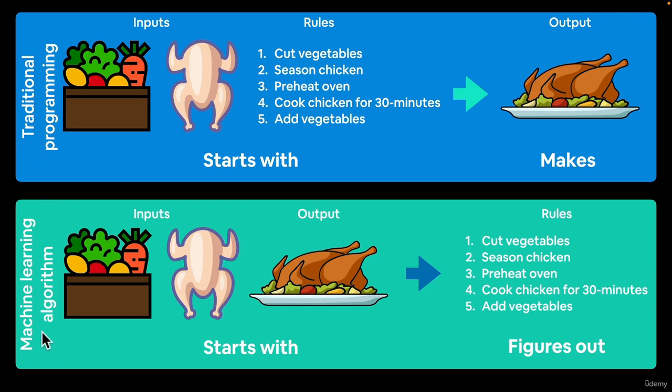Now a machine learning algorithm typically takes some inputs and some desired outputs, and then figures out the rules, so the patterns between the inputs and the outputs. So where in traditional programming we had to hand write all of these rules, the ideal machine learning algorithm will figure out this bridge between our inputs and our idealized output.